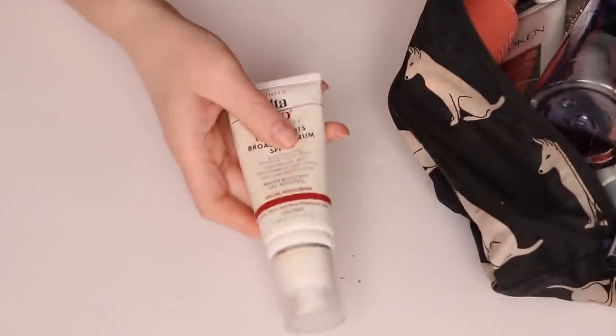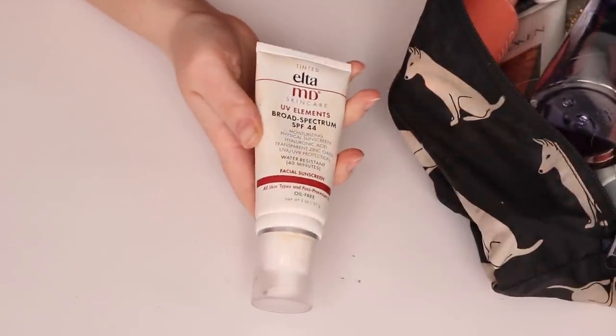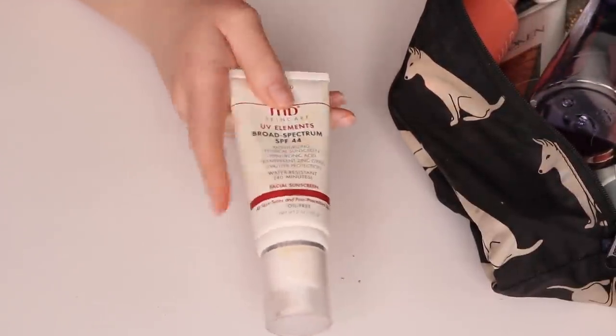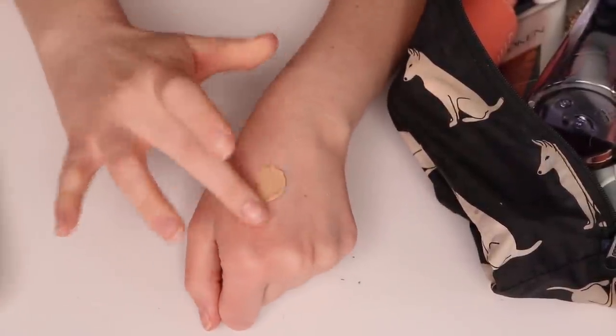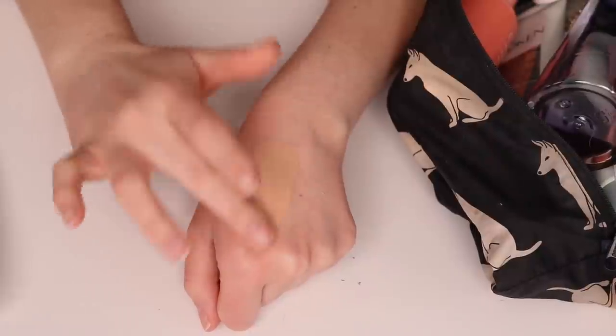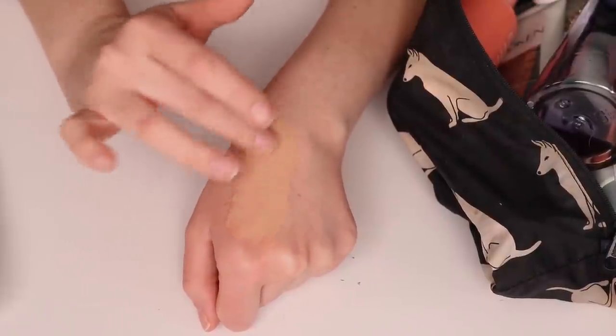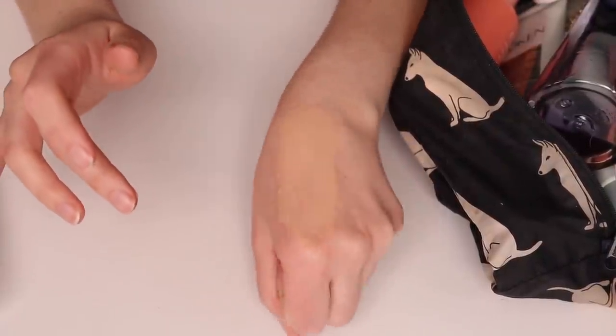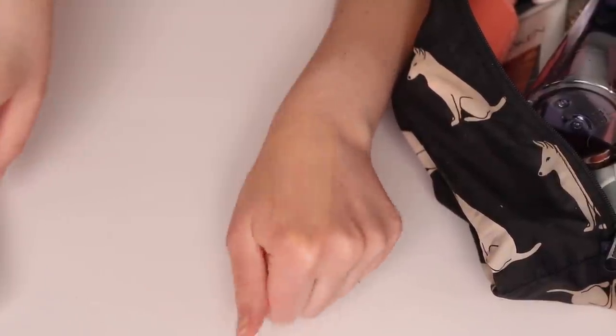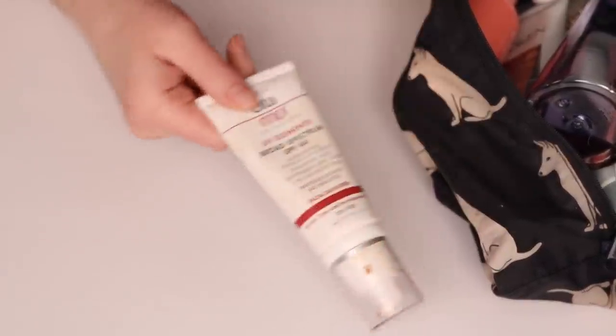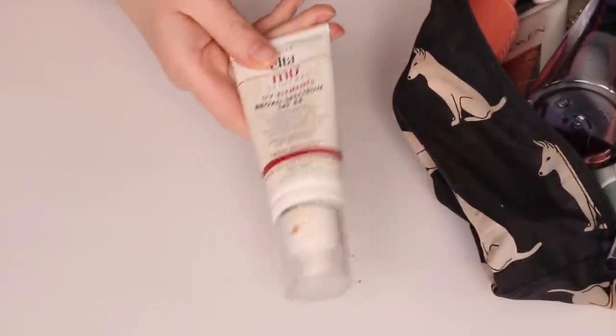So number one, this is the tinted sunscreen I was talking about. This is the Elta MD UV Elements. This is typically too dark for me, though I love the formula and it works really well for me. But again, I can't wear this on an everyday basis. But as far as tinted mineral sunscreens go, this is definitely one of my favorites. Really good stuff though. So I'm excited to be able to get some use out of this. As far as Elta MD products go, this is definitely one of my favorites.